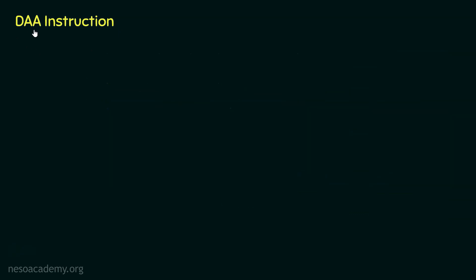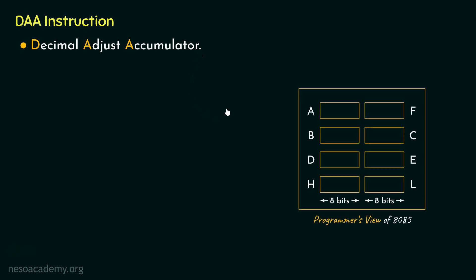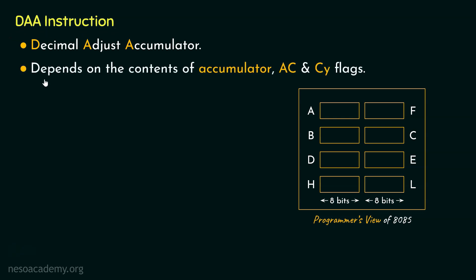The DAA instruction stands for Decimal Adjust Accumulator. After the addition has been performed, the result is stored inside the accumulator. The DAA instruction adjusts the accumulator according to the BCD coding of decimal, and what it does depends on the contents of the accumulator, the auxiliary carry flag, and the carry flag.